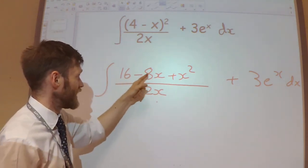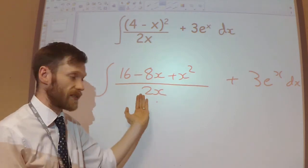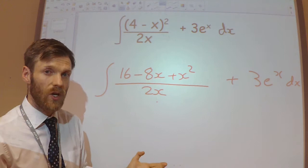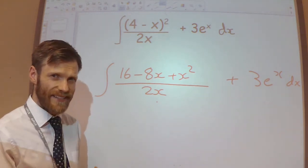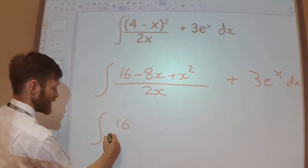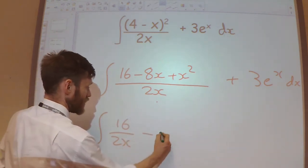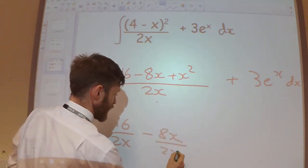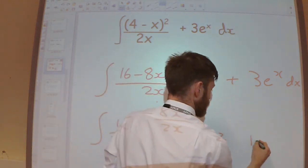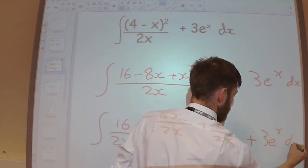I could split it up into three separate fractions, which would then, hopefully, make it easy for me to integrate those three things. So I'm going to write it as 16 over 2x minus 8x over 2x plus x squared over 2x. I'm still keeping this 3e to the x over there.